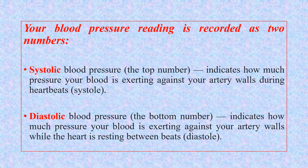Blood pressure gives us two numbers: the top number which is the numerator, and the bottom number which is the denominator. The top number is the systolic blood pressure — it indicates how much pressure your blood is exerting against your artery wall during a heartbeat, which is during systole. The bottom number, the diastolic, indicates how much pressure the blood is exerting against your artery walls while the heart is resting between beats — during diastole.